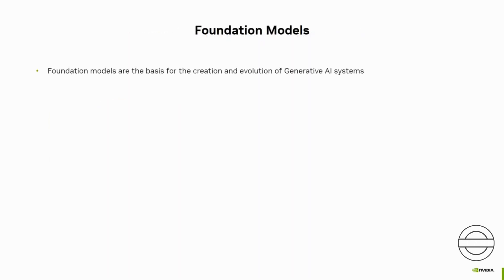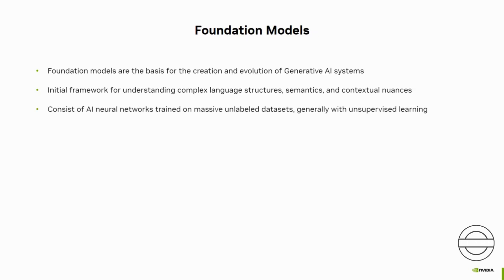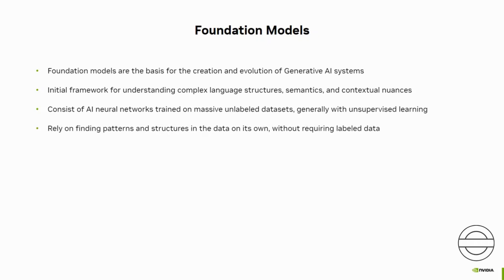Foundational models serve as the basis, or foundation, for the creation and evolution of Generative AI systems, providing the initial framework for understanding complex language structures, semantics, and contextual nuances. They consist of AI neural networks trained on massive unlabeled datasets to handle a wide variety of jobs, such as generating text, images, summarizing documents, translating languages, and more. One of the breakthroughs with Generative AI models is the ability to leverage different learning approaches, including unsupervised or semi-supervised learning for training — that is, finding patterns and structures in the data on its own, without requiring labeled data to train a model.